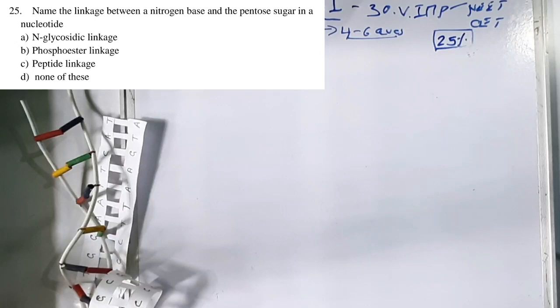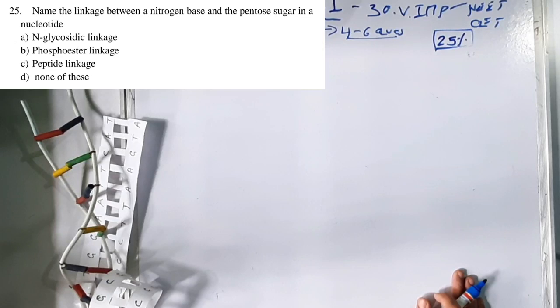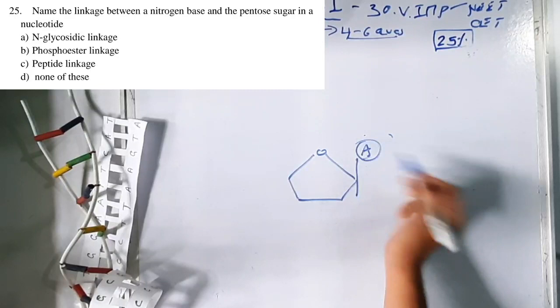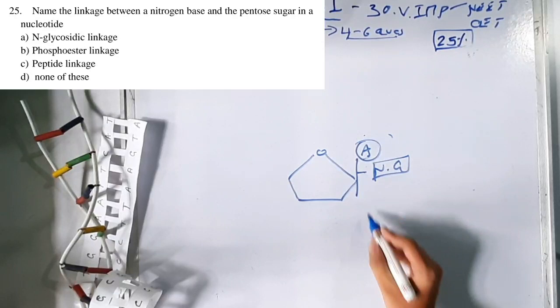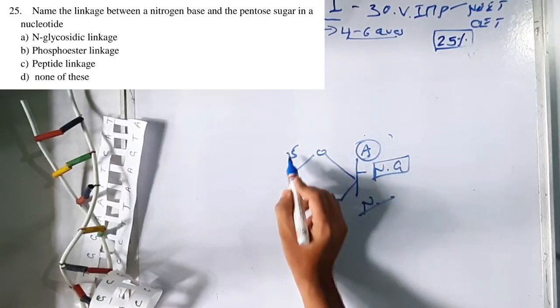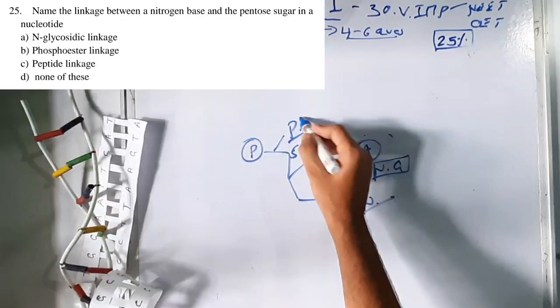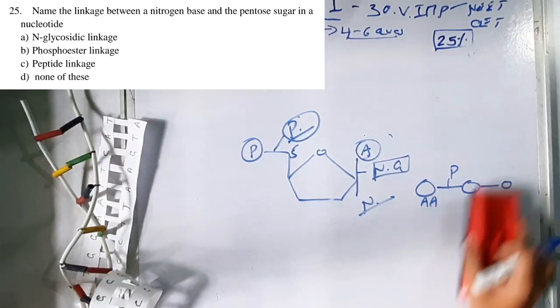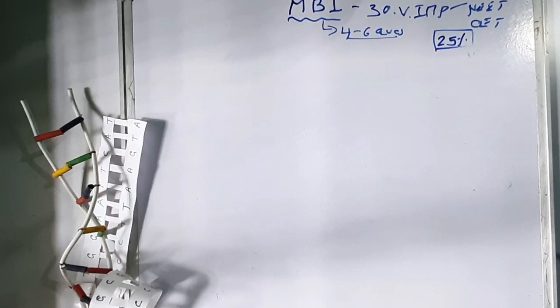Question 25: The linkage between a nitrogenous base and the pentosugar in a nucleotide is N-glycosidic linkage. This N-glycosidic linkage between a nitrogenous base and a pentosugar forms a nucleoside. The linkage between a phosphate group and a nucleoside is phosphodiester linkage. The linkage between two amino acids is a peptide bond. Option A — N-glycosidic linkage — is correct.